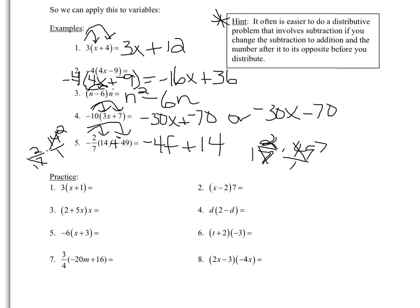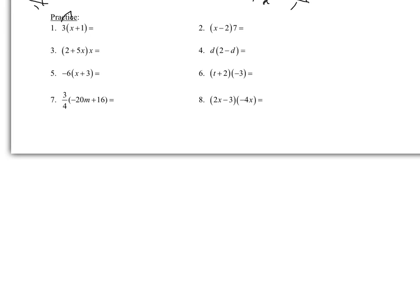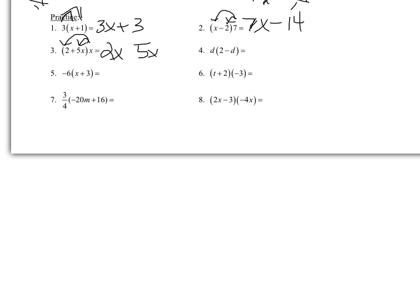For the first answer, we distribute in that 3: 3 times x and 3 times 1, giving us 3x plus 3. For number 2, no negatives involved, so we don't switch the subtraction: 7 times x gives 7x, and 7 times 2 gives 14, with a subtraction in between, so 7x minus 14. For number 3, x is outside the parentheses: x times 2 is 2x, and x times 5x is 5x squared, with a plus in between, giving 2x plus 5x squared. For number 4, multiplying by d: d times 2 is 2d, minus d times d is d squared.